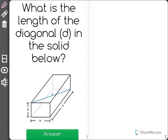What is the length of the diagonal d in the solid below? Now this is a multi-step problem because you can see the diagonal runs from the top left corner to the bottom right, the opposite side of the solid.